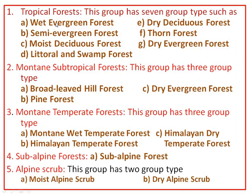Coming toward the sixteen types: from tropical forest, we have seven types — wet evergreen forest, semi-evergreen forest, moist deciduous forest, littoral and swamp forest, dry deciduous forest, thorn forest, and dry evergreen forest. Mountain subtropical forest has three types: broad-leaved hill forest, pine forest, and dry evergreen forest. Mountain wet temperate forest has two types: Himalayan temperate forest and Himalayan dry temperate forest. Sub-alpine forest has one type: sub-alpine forest. Alpine scrub is divided into two types: moist alpine scrub and dry alpine scrub.